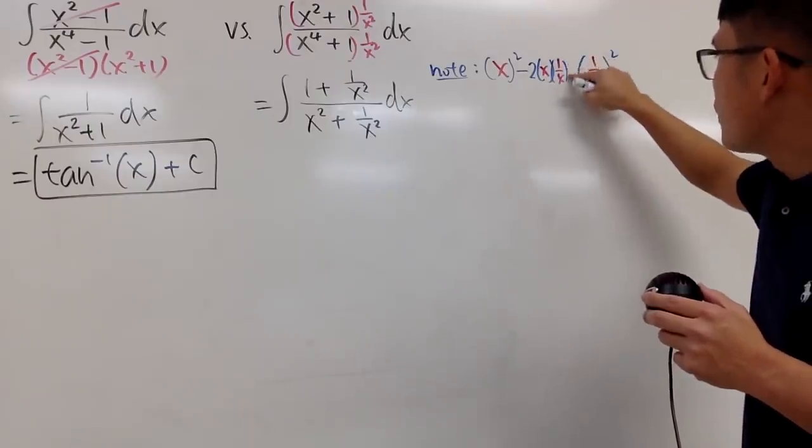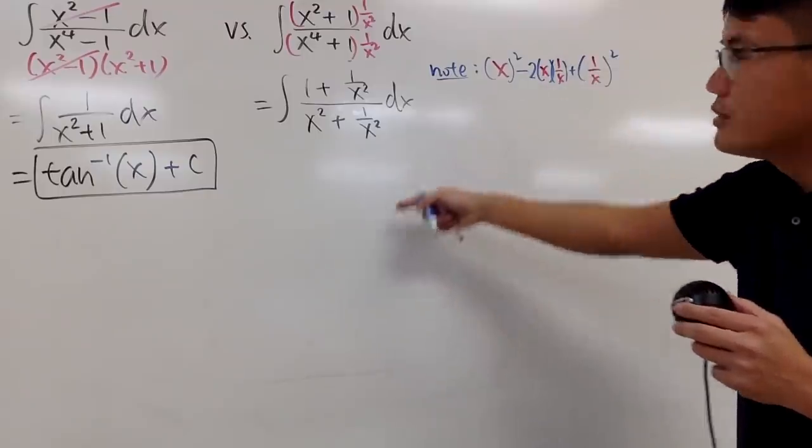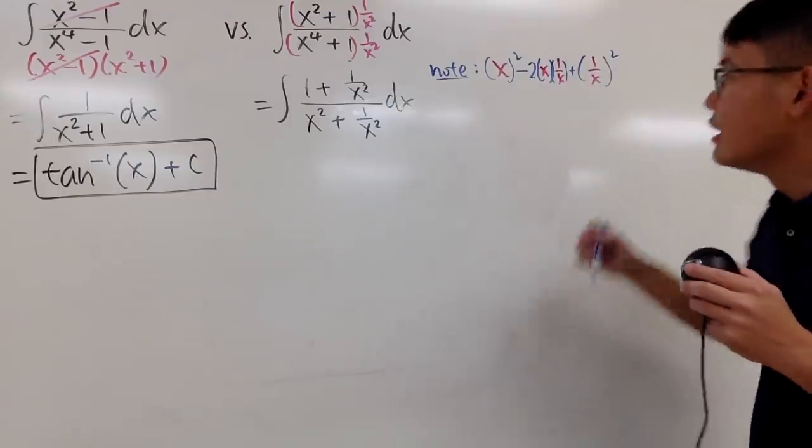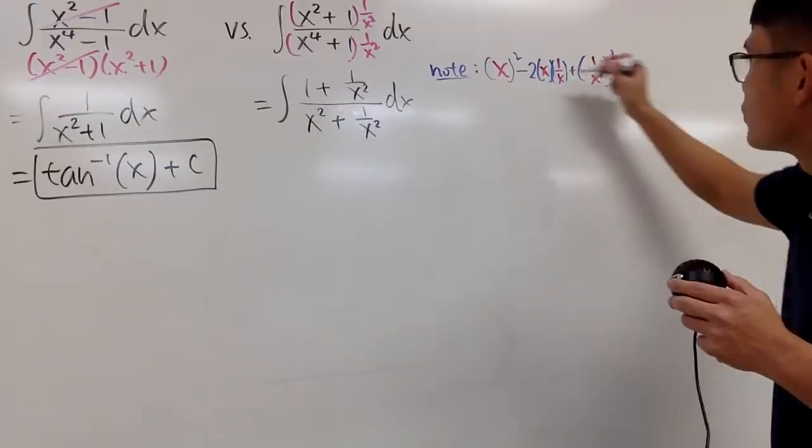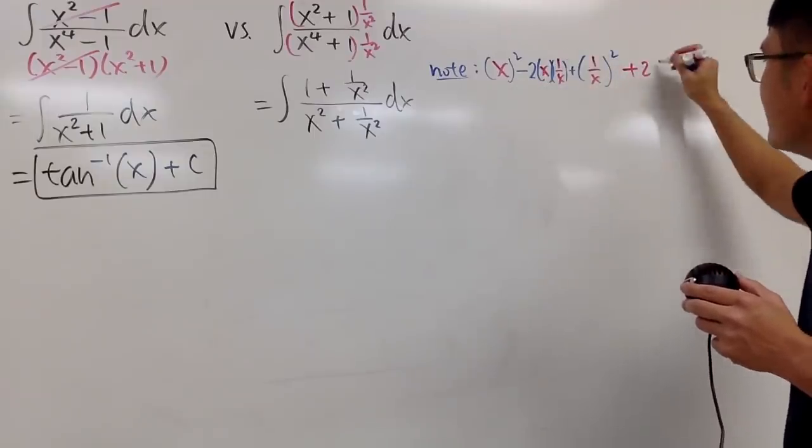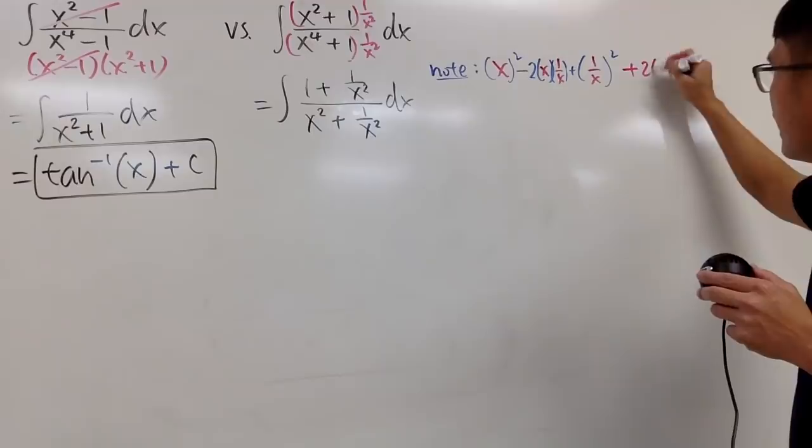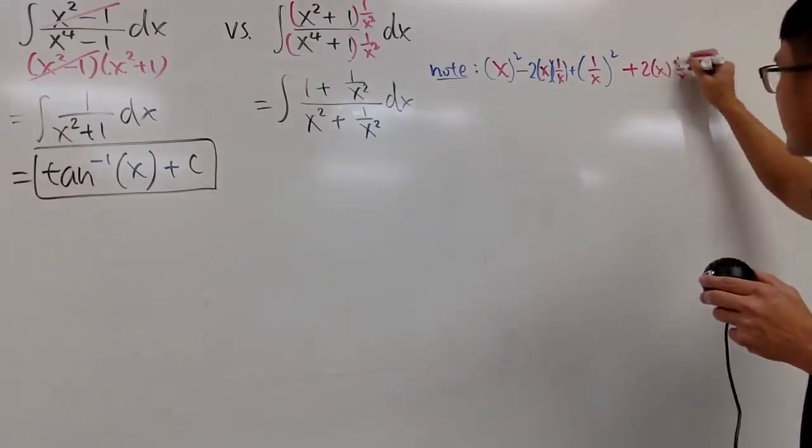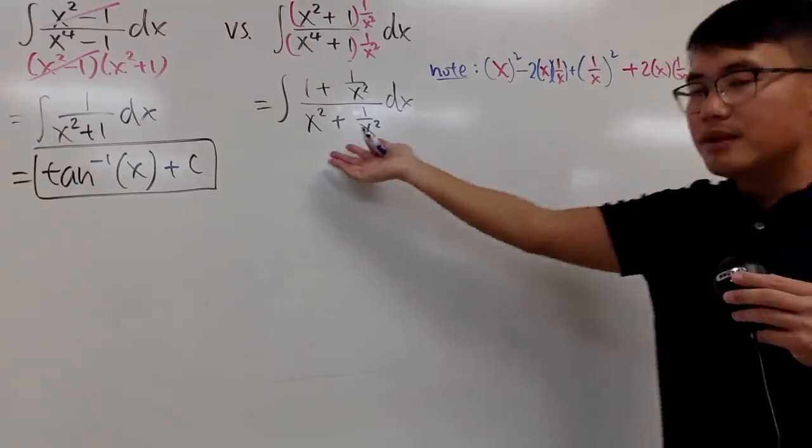But when we subtract this, we have to add—we add 2x times 1/x back, so it's still equivalent to the original.